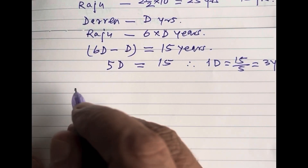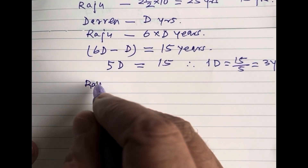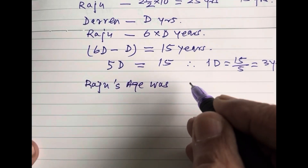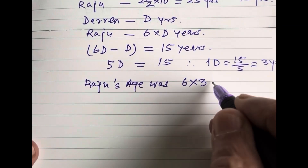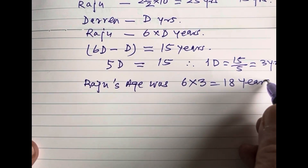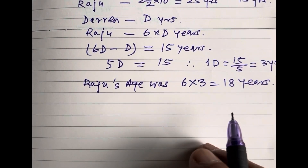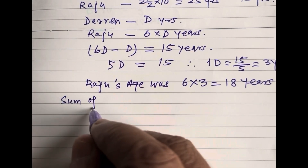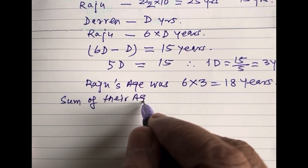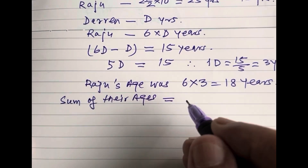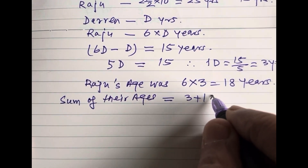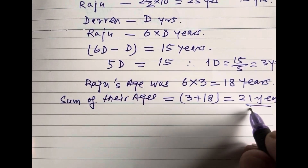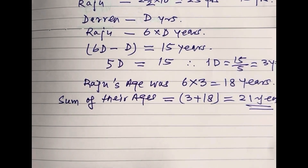So this means when Darren was 3 years old, Raju was 6 multiplied by 3, that is 18 years old. Hence the sum of their ages equals 3 plus 18 years, that is 21 years, and this is the answer.